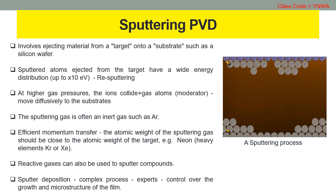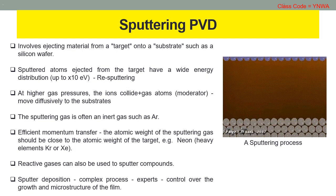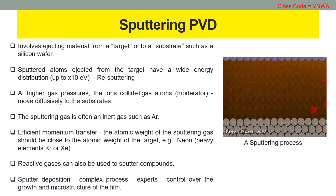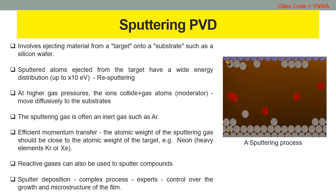For efficient momentum transfer, the atomic weight of the sputtering gas should be close to the atomic weight of the target. For sputtering light elements, neon is preferable, while for heavy elements, krypton or xenon are used. Reactive gases can also be used to sputter compounds. The compound can be formed on the target surface, in flight, or on the substrate depending on the process parameters. The availability of many parameters that control sputter deposition make it a complex process, but also allow experts a large degree of control over the growth and microstructure of the film.